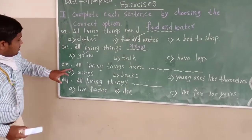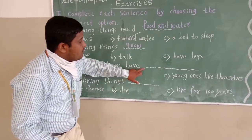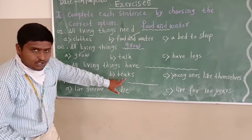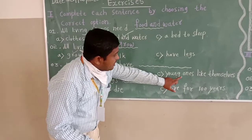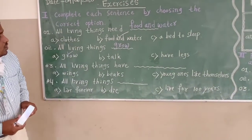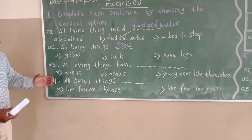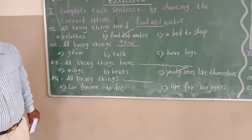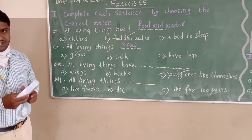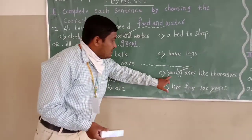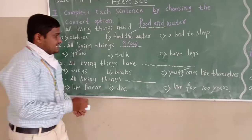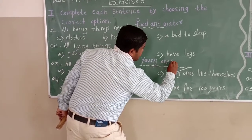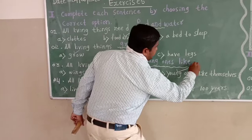Third one: all living things have blank. The options are: Option A, wings; Option B, wings; Option C, ones like themselves. The correct answer for this question is ones like themselves. This is also a characteristic of living things — all living things produce ones like themselves. The answer is Option C: ones like themselves.